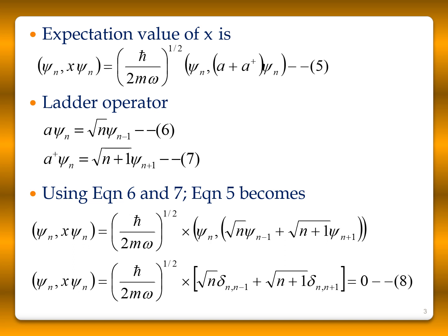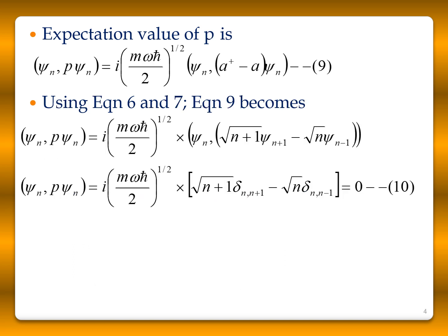To find the expectation value of p, we compute ⟨ψ_n | p | ψ_n⟩. Using p in terms of ladder operators, this is i(m omega ℏ / 2)^(1/2) times ⟨ψ_n | (a† − a) | ψ_n⟩, which equals i(m omega ℏ / 2)^(1/2) times [√(n+1) · δ(n, n+1) − √n · δ(n, n−1)]. By the orthogonality property, both delta functions are zero, so the expectation value of p is equal to 0.